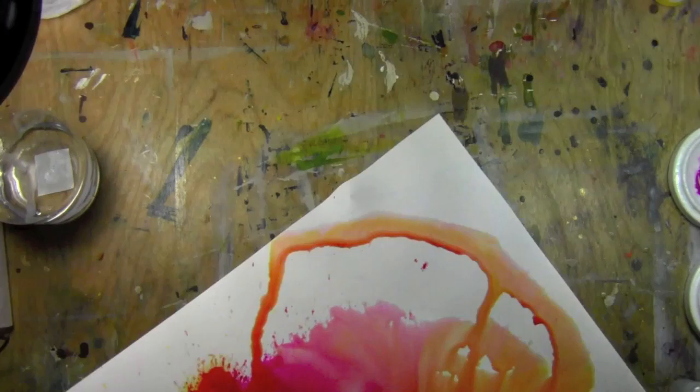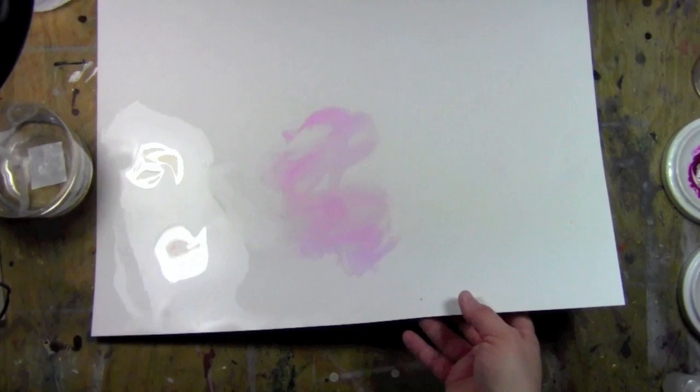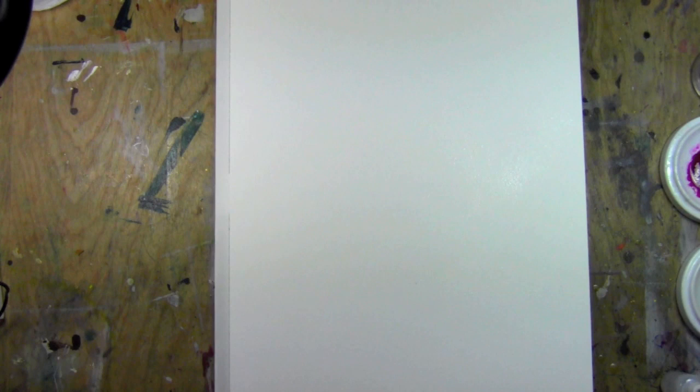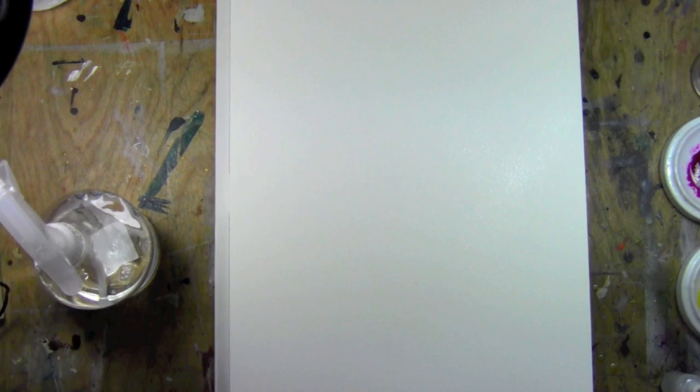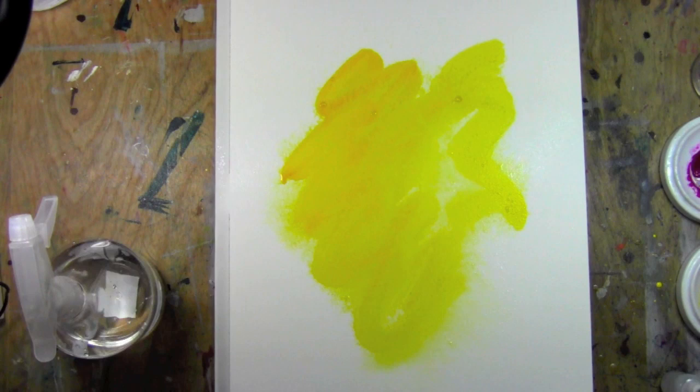I just want to show you this - I just poured all this off. The quinacridone magenta is staining so it stained, but I just rinsed this off with water and I can use this again. Now I'm using 140-pound cold press watercolor paper. I needed something a little more absorbent to show you how the oiler boilers work.